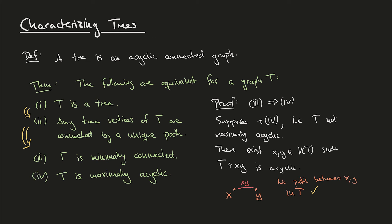This also means that T is not connected, because there are no paths between x and y. In particular, T can't be minimally connected, because minimal connectivity at least requires T to be connected. So the fact that T is not connected implies property 3 does not hold. Thus we've shown that if property 4 does not hold, then property 3 does not hold either — which is logically equivalent to 3 implies 4.